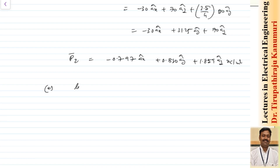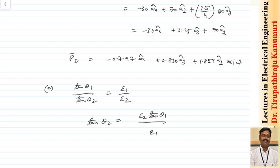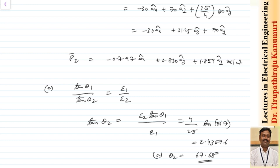For part e, we calculate theta 2 using tan theta 1 divided by tan theta 2 equals epsilon 1 divided by epsilon 2. Therefore tan theta 2 equals (epsilon 2 / epsilon 1) times tan theta 1 equals (4 / 2.5) times tan 56.7 degrees, which gives 2.43576, so theta 2 equals 67.68 degrees.